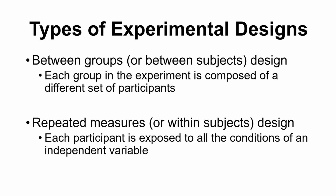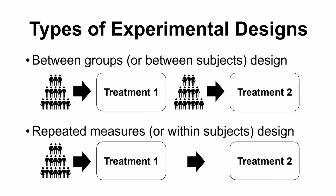For terminology, the experiments we've been talking about so far have mainly fallen under a between-groups or between-subjects design. That means we are comparing differences between different groups. For between-groups, group one — our experimental group — receives treatment one, say they receive the drug. We have a second group that gets the second condition of that IV — no drug. At the end, we compare the scores from those who received the drug to the scores from those who did not, comparing the means between those two groups — hence, between groups. We also say between subjects because this group has these subjects and that group has those subjects — they are two separate groups of people.